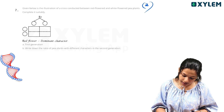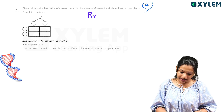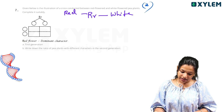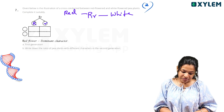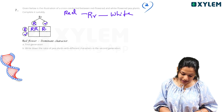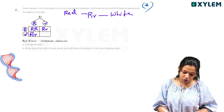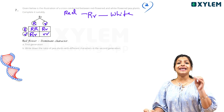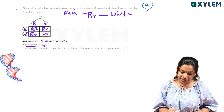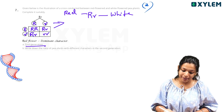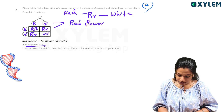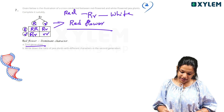Capital R, capital R crossed with small r and white flower. In this one generation: capital R and small r crossed gives capital R capital R, capital R small r, capital R small r, small r small r. Capital R is the dominant allele — capital R gives red flower. So the first generation result is red flower.